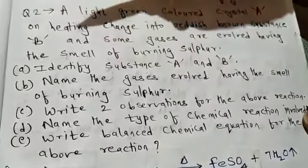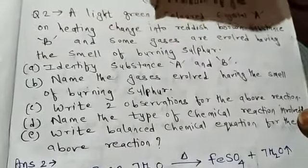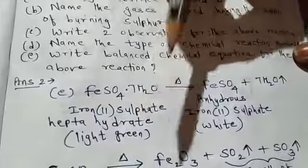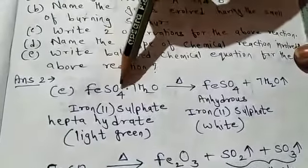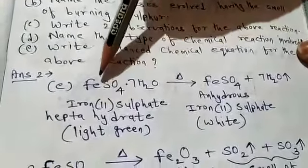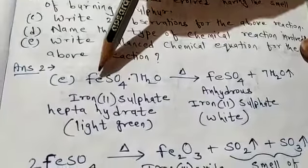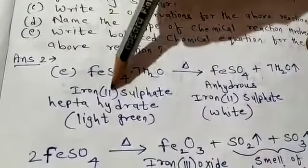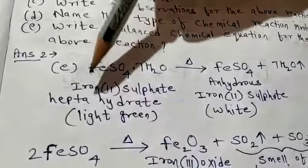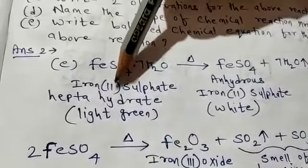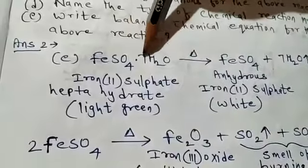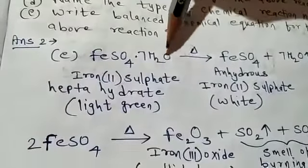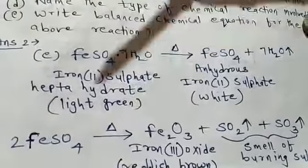We already discussed in the last period — what is the light green colored crystal? That is iron(II) sulfate heptahydrate. Why 'II'? Because in FeSO₄, iron has two valencies: 2 and 3. In FeSO₄, valency 2 is used, so the name is iron(II) sulfate heptahydrate. This is the light green colored crystal.